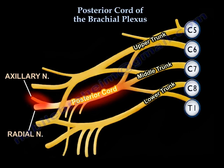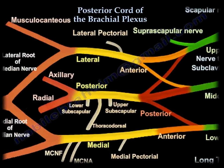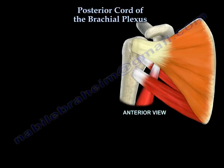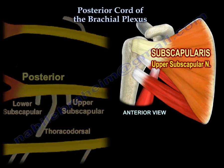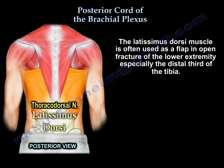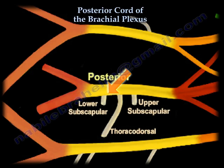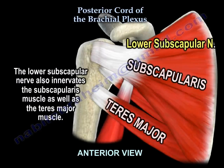The radial nerve and the axillary nerve are the two terminal branches of the posterior cord of the brachial plexus. Other branches include the upper subscapular nerve, which supplies the subscapularis muscle, followed by the thoracodorsal nerve, which supplies the latissimus dorsi. This muscle is very useful in flaps for the lower extremity in open fractures — especially the distal third of the tibia — and can also be used as a transfer in the shoulder to help young patients with large rotator cuff tears that cannot be repaired. The lower subscapular nerve innervates the subscapularis and teres major muscles.